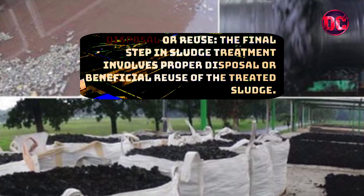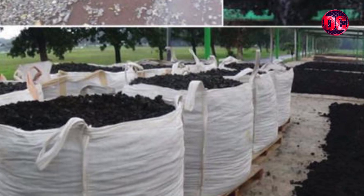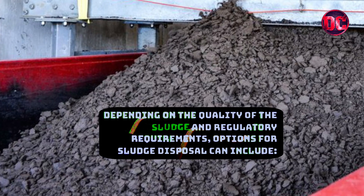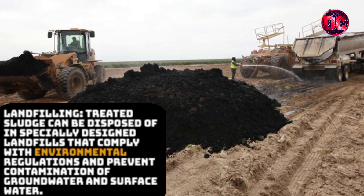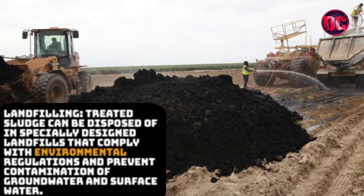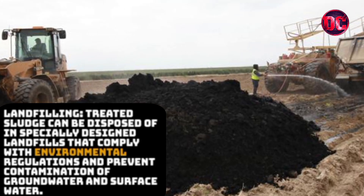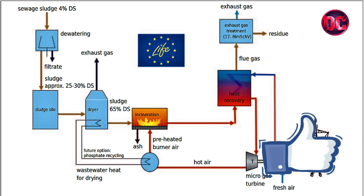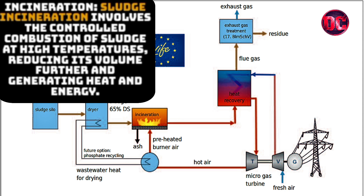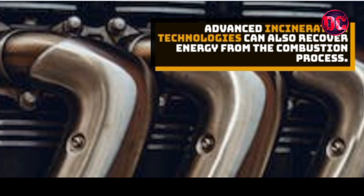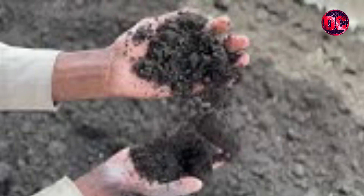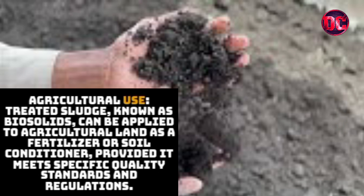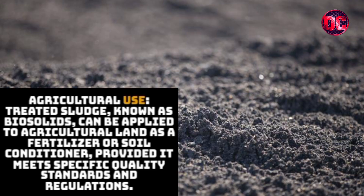The final step in sludge treatment involves proper disposal or beneficial reuse of the treated sludge. Depending on the quality of the sludge and regulatory requirements, options include landfilling, where treated sludge is disposed of in specially designed landfills that comply with environmental regulations and prevent contamination of groundwater and surface water. Incineration involves the controlled combustion of sludge at high temperatures, reducing its volume further and generating heat and energy. Advanced incineration technologies can also recover energy from the combustion process. Treated sludge, known as biosolids, can also be applied to agricultural land as a fertilizer or soil conditioner, provided it meets specific quality standards and regulations.